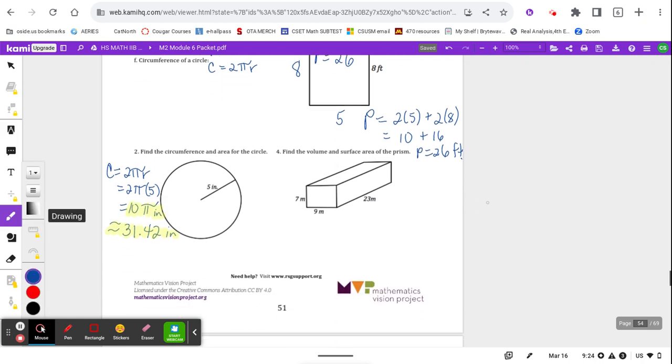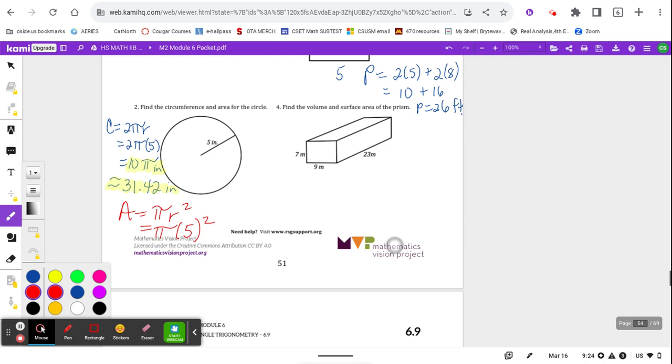Next, we have to do the area of a circle, which is pi r squared. r, again, is 5. 5 squared is 25 pi. This time my units are squared, square inches.